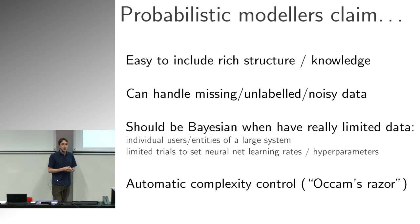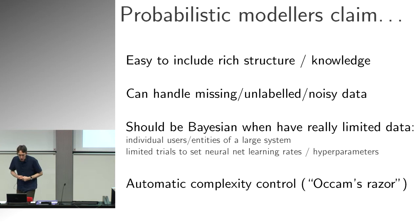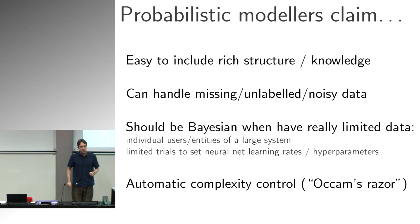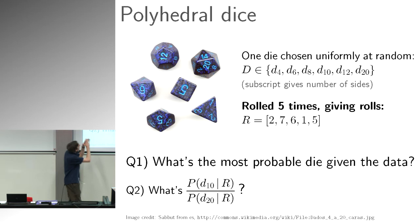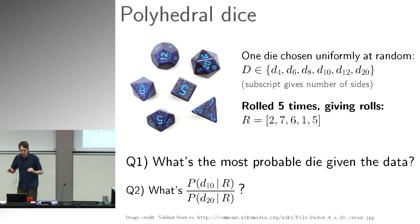The final issue I wanted to talk about has a fancy name: probabilistic models do automatic complexity control via Occam's Razor. The chapters in textbooks often seem mysterious on this. So here's the example — I have these dice, I picked one and rolled it five times, and these were the outcomes. Which dice do you think I picked?